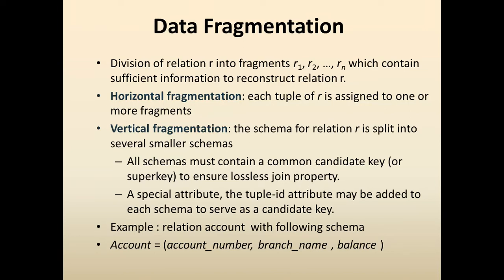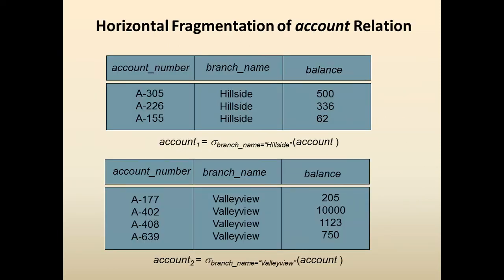For example, consider the account relation with schema: account number, branch name, and balance. In horizontal fragmentation, you write a selection query using a condition on branch name — for instance, one fragment for one branch such as Valley View, and another fragment for another branch such as Hillside. Both fragments belong to the account relation. This is horizontal fragmentation of the account relation.